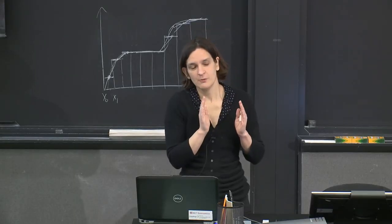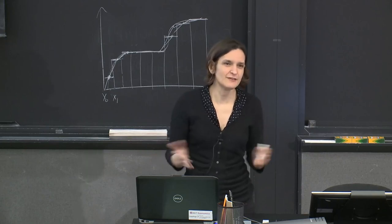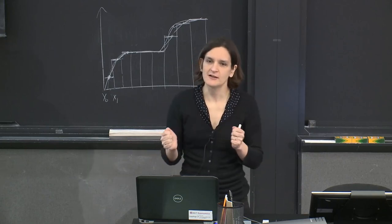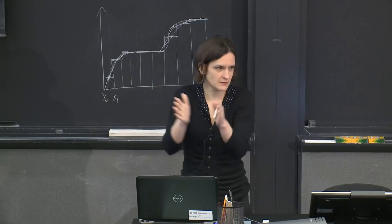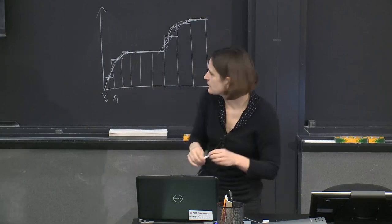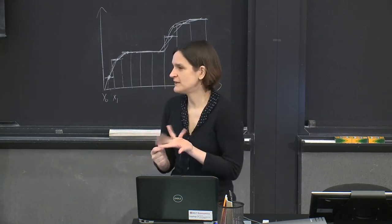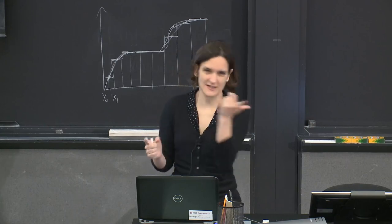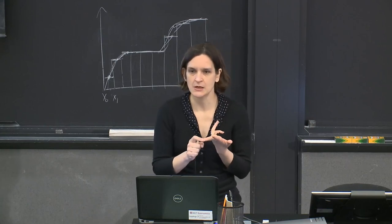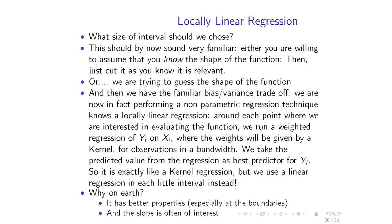So we again have the same usual trade-off between bias and variance. As the number of observations goes up, the interval size will go down. What we are doing here is running a third nonparametric method. We've seen kernel regression, and series expansion a moment ago. This is local linear regression, which is exactly the same idea as kernel regression — we divide the sample into bands and reduce the bandwidth as more observations are added, using cross-validation.